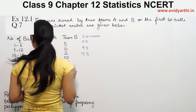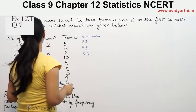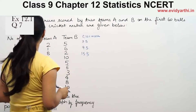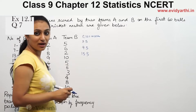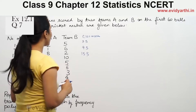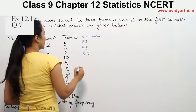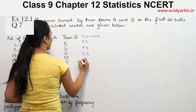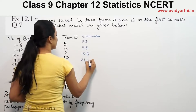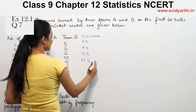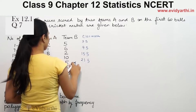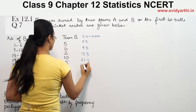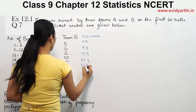Then 19 plus 24 is 43, and 43 divided by 2 is 21.5. Then 25 plus 30 gives us 55, and 55 divided by 2 is 27.5.